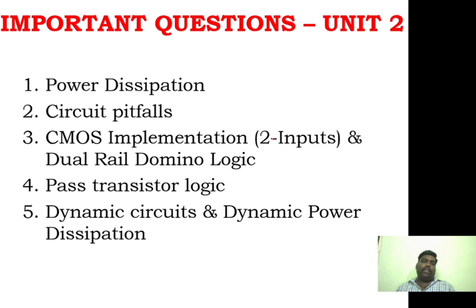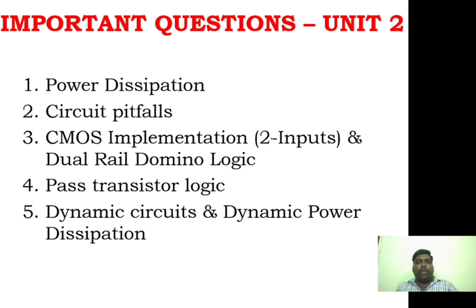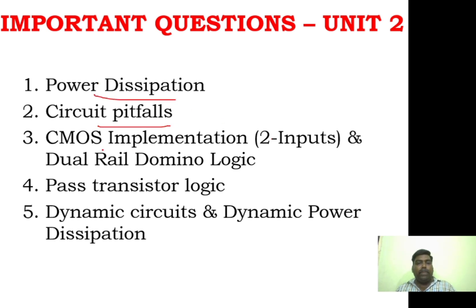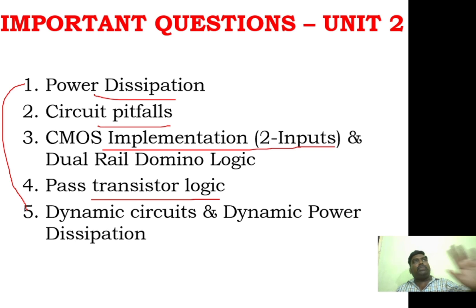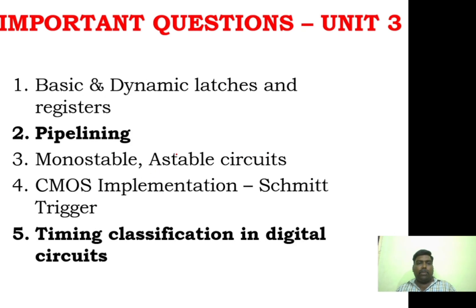For unit two, you can cover about five questions. Unit two starts with CMOS — you can talk about CMOS problems. Topics include power dissipation and circuit pitfalls. CMOS implementation with two inputs and four inputs is important. Dual-rail domino logic is very important, as well as pass transistor logic, dynamic circuits, and dynamic power dissipation. If you prepare these five questions, you can definitely complete unit two.